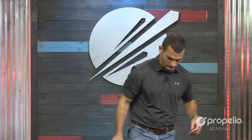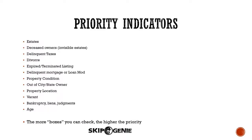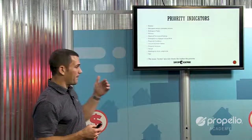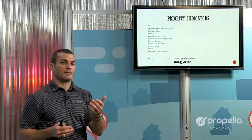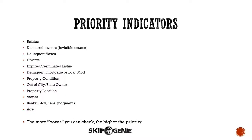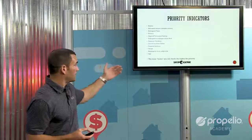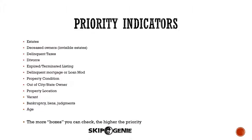So, priority indicators — what are some of the things and different points that you're looking for to help you prioritize your efforts? We talked about death in some of the previous sections. First and foremost, an obvious one is estates. What does an estate tell you? If a property is in an estate, the owner has died. Deceased owners — what I call invisible estates.